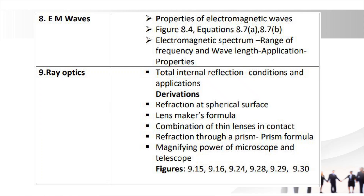Chapter 9: Ray Optics. Important topic: total internal reflection — conditions and applications. Important derivations: refraction at a spherical surface, lens maker's formula, combination of thin lenses in contact, refraction through a prism and prism formula, and magnifying power of microscope and telescope. Important figures: 9.15, 9.16, 9.24, 9.28, 9.29, 9.30.